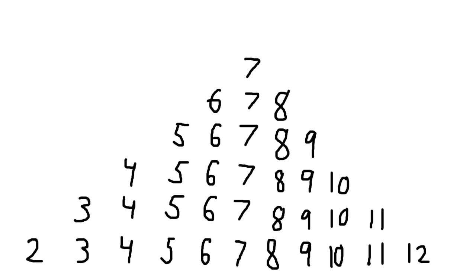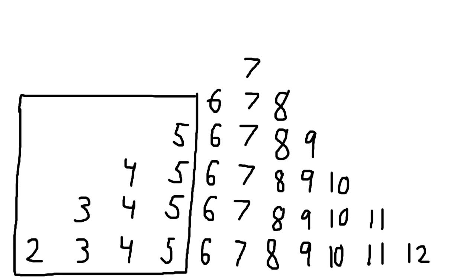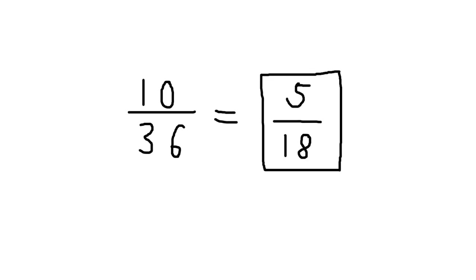So we end up with this bell curve shape, where 2 and 12 are rare, and 7 is much more common. To solve the problem, we just need to pluck out how many ways the sum can be 2, 3, 4, or 5. By my count, that's 1 plus 2 plus 3 plus 4, which equals 10. So there are 10 ways to roll a sum less than or equal to 5, and 36 total possibilities. The probability of rolling a sum less than or equal to 5 is 10 divided by 36, or 5 divided by 18.